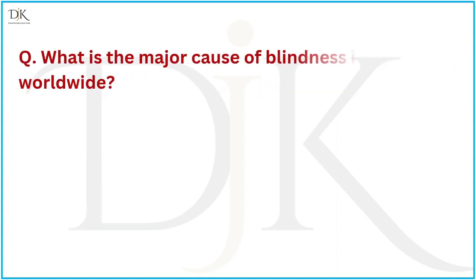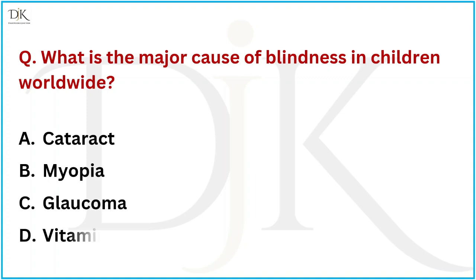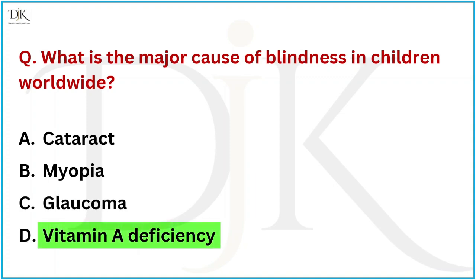What is the major cause of blindness in children worldwide? The right answer is Vitamin A deficiency.